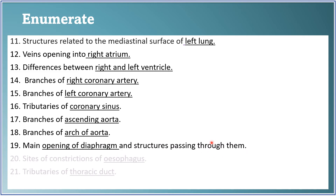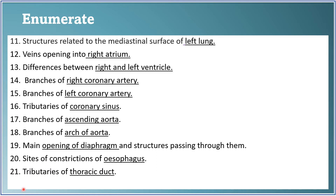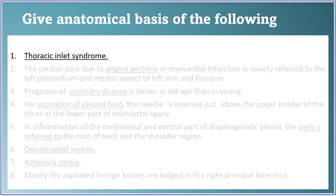Main openings of the diaphragm and structures passing through them is very important — all three openings may be asked, or only one: the aortic, inferior vena cava, or esophageal opening. Sites of constriction of the esophagus can also come as a short note — mention what causes each constriction and the distance of each from the incisor tooth. Tributaries of the thoracic duct can also be asked. Preparing enumerations also prepares you for viva voce questions.